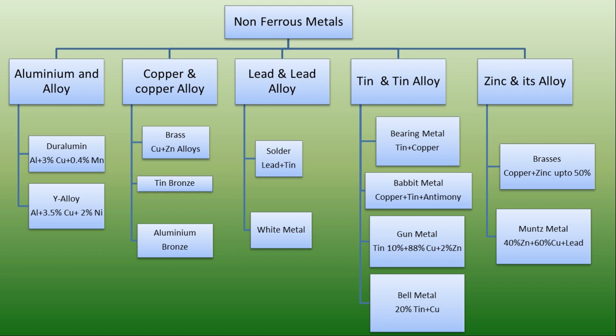First one: aluminium and its alloys. Aluminium has two types of alloys. First one is Duralumin, which contains 3% copper and 0.4% manganese. It is used in tubes, bars, sheets, and rivets. While Y-alloy has 3.5% copper, 2% nickel, and 1.2% manganese. Y-alloy has better strength and hence it is useful for making parts like pistons.